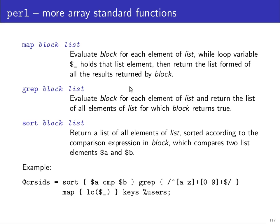Here are some very useful operators that operate on lists. The map operator executes the block for each element of the list, so this is really a loop operator. It evaluates each of these blocks in list context, and whatever the block returns, all of those lists it gets back will be concatenated — and that's the return value.